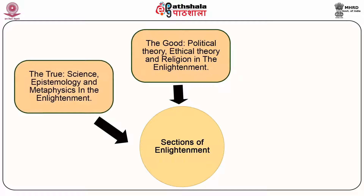Then we have the true sciences, or the exact sciences, starting from physics, chemistry, mathematics, and biology, which all take up epistemology — that is, the theory of knowledge. What is knowledge? Where does knowledge come from? What are the conditions of knowledge? What makes good knowledge? What is true knowledge and what is untrue knowledge? All this comes under the realm of epistemology and metaphysics. Metaphysics — two words, meta and physics — asks what is beyond the sun and moon, which gives a quest for knowledge.